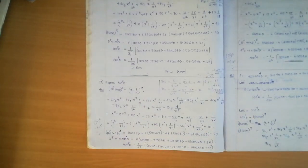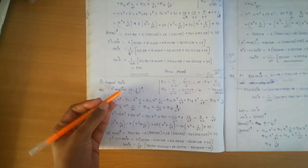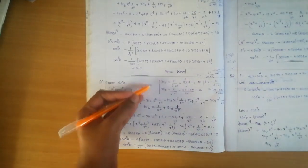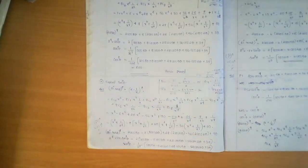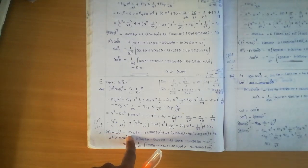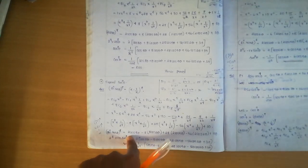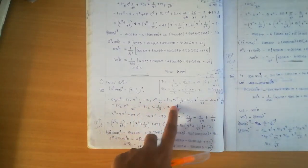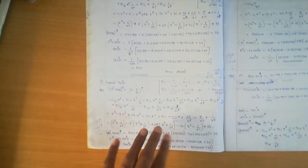Now expand sin raised to 8 theta. That is sin raised to n theta with n equal to 8. We use the equation 2i sin theta the whole raised to 8 equals x minus 1 by x the whole raised to 8. Right side, we simplify using A minus B the whole raised to n expansion: nC0 A raised to n minus nC1 A raised to n minus 1 into B plus nC2 A raised to n minus 2 into B squared minus nC3 — alternate positive and negative.